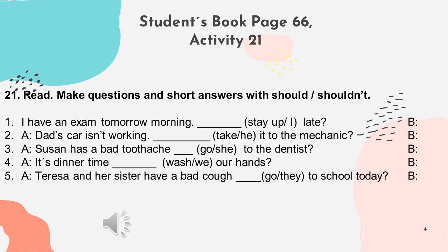For example, first we write 'should,' then the subject — in this case 'I' — then the verb 'stay up,' and then the complement 'late.' So: 'I have an exam tomorrow morning. Should I stay up late?' — '¿Debería levantarme tarde?'